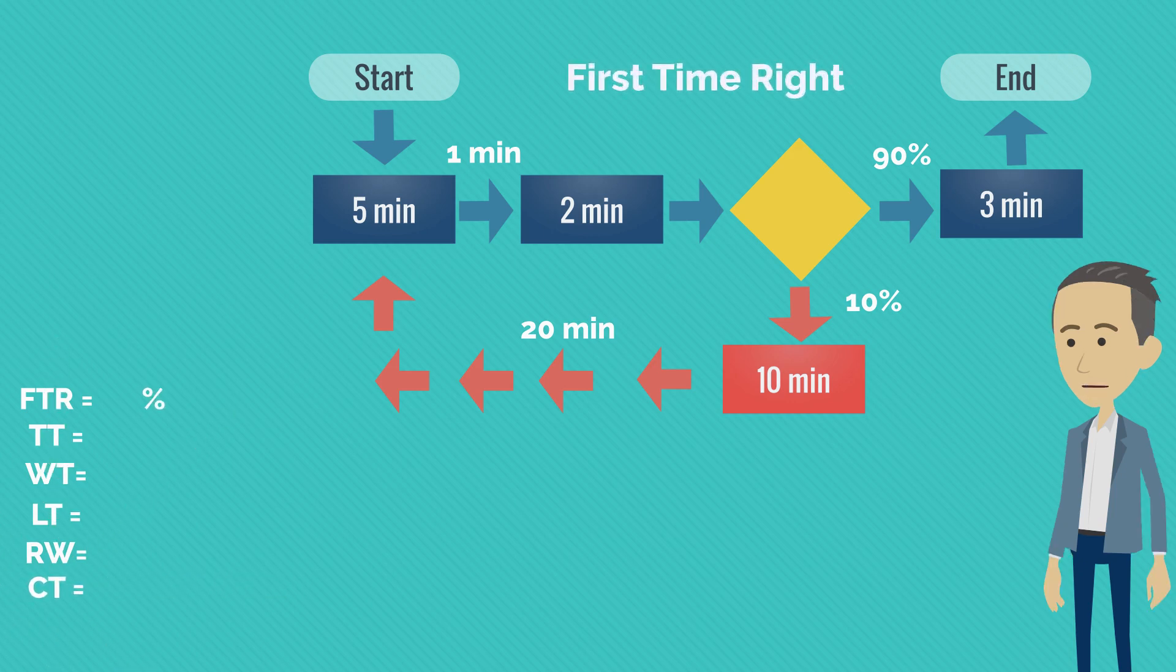First time right is a percentage and measures how many units go through a process without any errors, basically without rework. In our case, it's easy to see that 90% of the units go through without any errors, while 10% enter the rework loop. So first time right equals 90%.